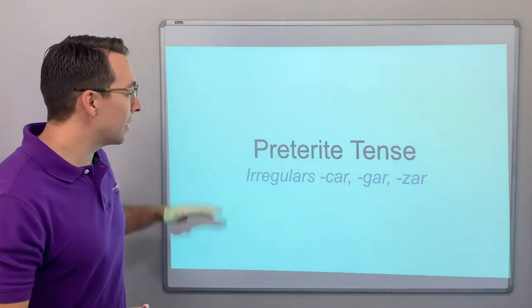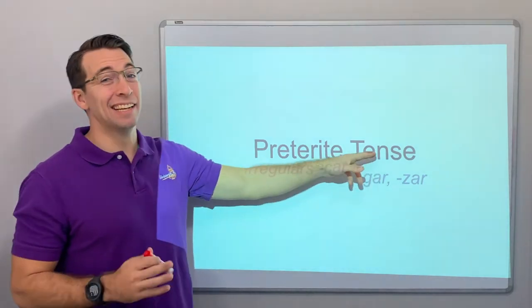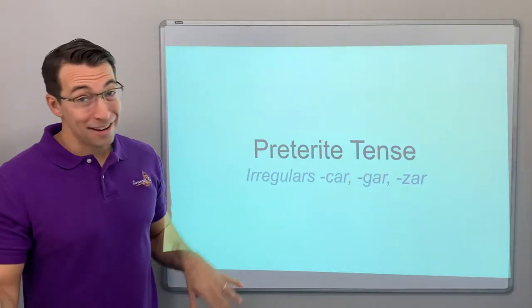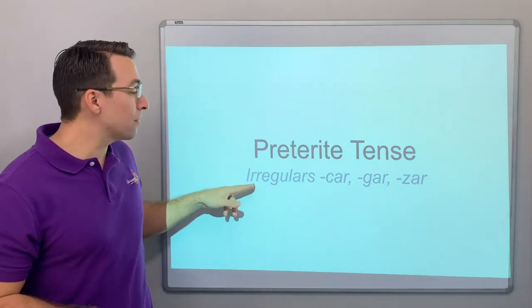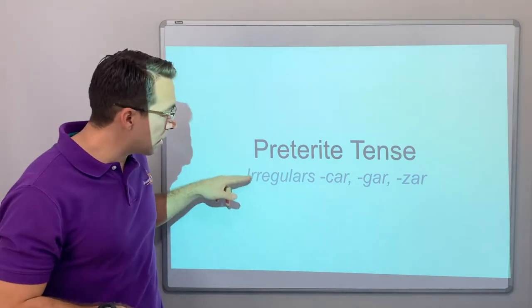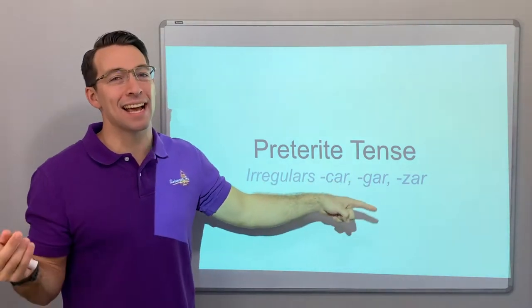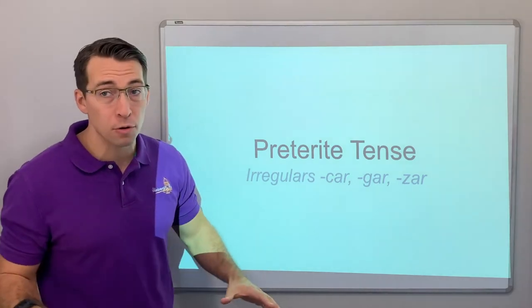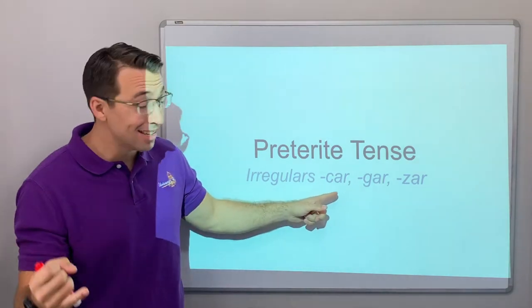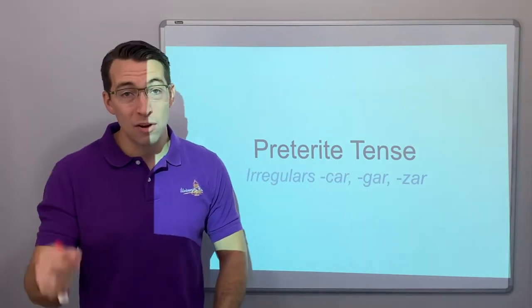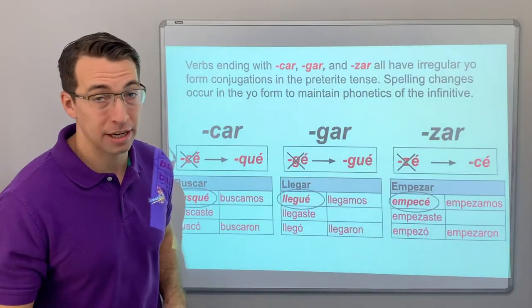What's up, everybody? So, the preterite tense — again, a lot of irregulars in the preterite tense. These verbs, irregulars: KAD, GAD, and ZAD. Any AR verb ending with KAD, GAD, or ZAD is irregular in the preterite tense. So, let's check it out.